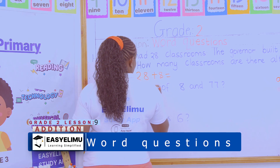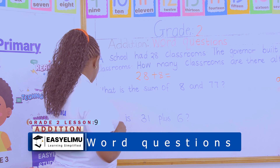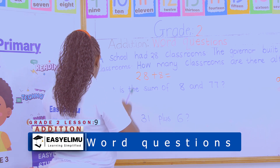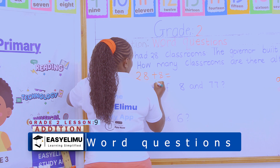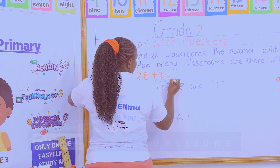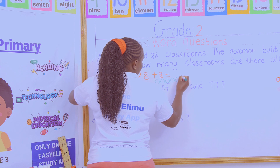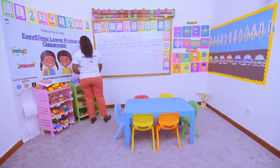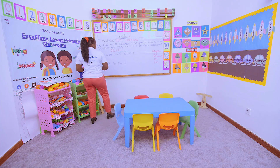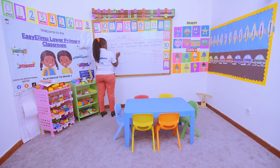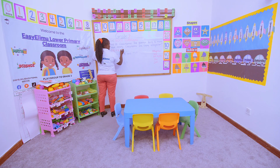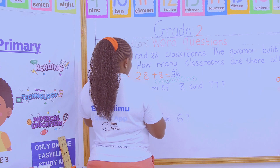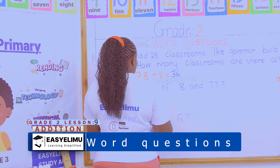Which method do you prefer us to use? We count on — very good! We have 28 in the head, then we count on 8 more: 29, 30, 31, 32, 33, 34, 35, 36. So the school had 36 classrooms all together.